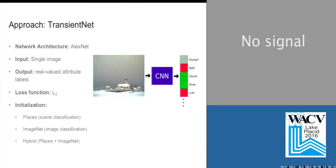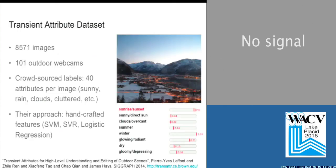Our approach is really, really simple. We call it TransientNet. We took the AlexNet network architecture, with the input as a single image and the output as a set of real-valued labels. We use the L2 loss function. We tried three different initializations — ones that were pre-trained for scene classification, image classification, or a combination of the two. We use a relatively small dataset to train on: 8,571 images from 101 outdoor webcams collected by LaFont et al. for a SIGGRAPH 2014 paper.